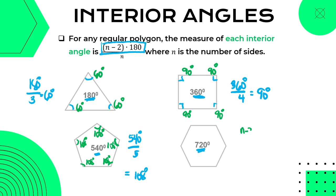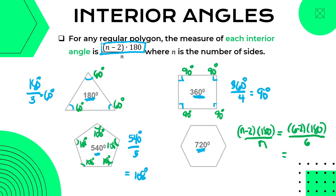For the hexagon, let's double-check using the formula. We have a hexagon with 6 sides: six minus two is four, times 180, gives 720. Divided by 6, that is 120 degrees per interior angle.